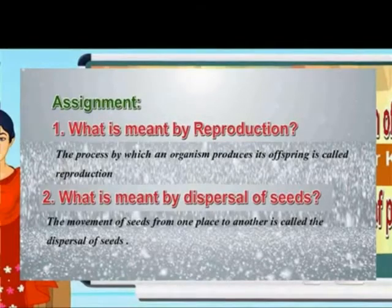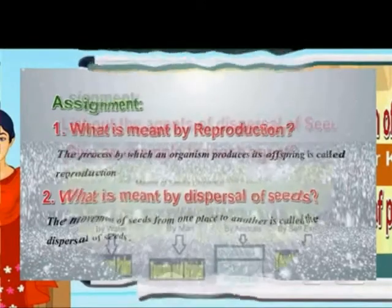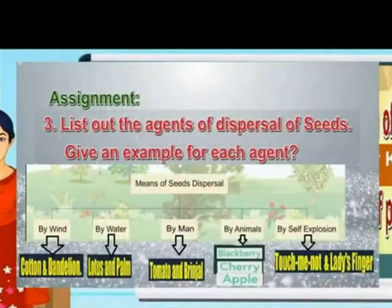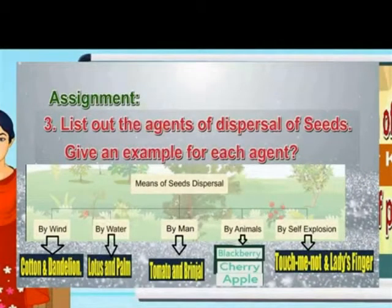Question 3: Describe the agents of dispersal of seeds. Give an example for each. By wind: cotton, dandelion. By water: lotus, palm.